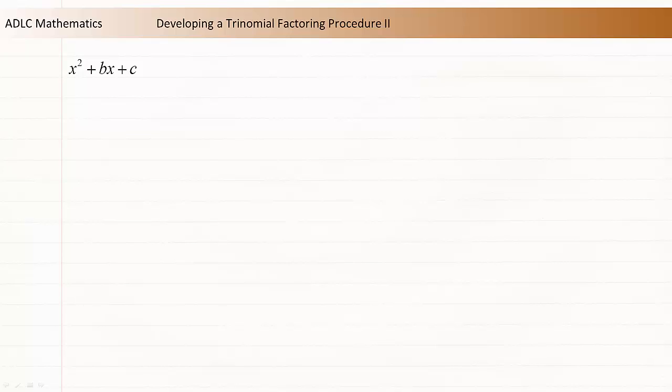The previous two videos developed a procedure for factoring trinomials of the form x squared plus bx plus c. You've also come across trinomials of the form ax squared plus bx plus c. Is it possible to factor this type of trinomial?